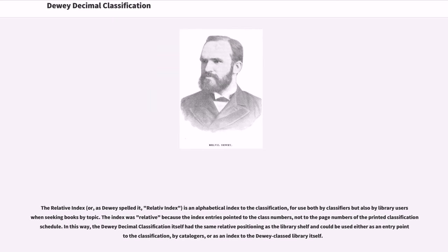The relative index, or as Dewey spelled it, relative index, is an alphabetical index to the classification, for use both by classifiers and by library users when seeking books by topic. The index was relative because the index entries pointed to the class numbers, not to the page numbers of the printed classification schedule. In this way, the Dewey Decimal Classification itself had the same relative positioning as the library shelf and could be used either as an entry point of the classification by catalogers, or as an index to the Dewey class library itself.